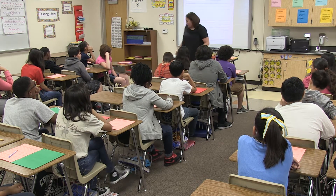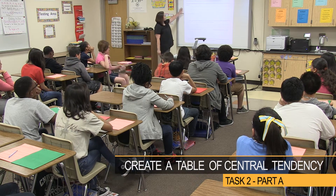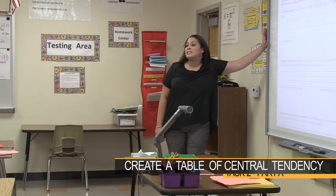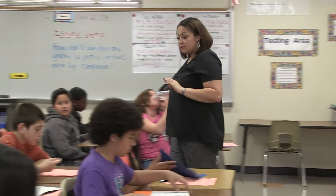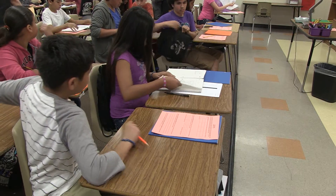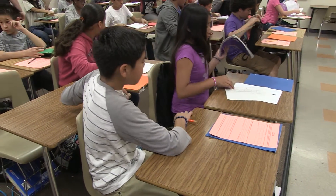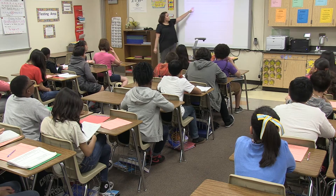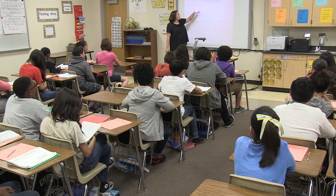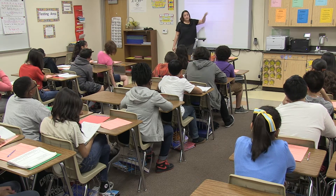So on your paper, you have a table here. You're going to have to get out your data — you have five seconds to get your data out of your folders. If you don't have your data, share with a friend. We're going to create a table with your data, and then within your table you're going to find the mean, median, mode, and range.